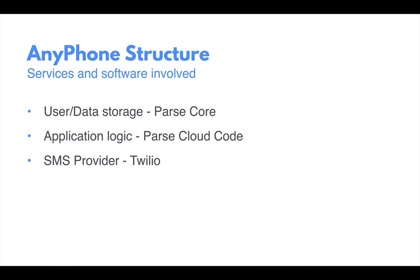To show you a full implementation of this, we built AnyPhone — an example open source application that does all of this and a little bit more. The structure of this is that we store our users and any other data on ParseCore. Our application logic, which validates the numbers and sends the text messages, is all done in cloud code on Parse. And we use the third-party provider Twilio to send our text messages.